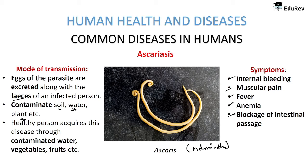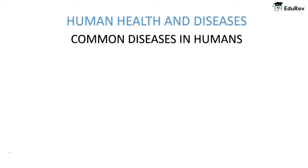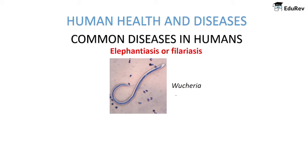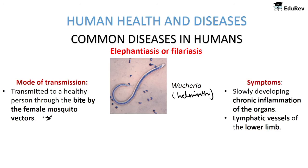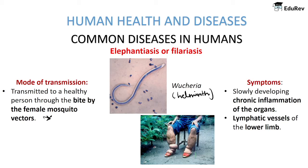Another common disease is elephantiasis or filariasis, caused by a helminth known as Wuchereria, the filarial worm. It is transmitted to a healthy person through the bite of an infected female mosquito vector. Its main symptom is slowly developing chronic inflammation of the organs. The lymphatic vessels of the lower limbs are affected, leading to various deformities, and in some cases genital organs are also affected.